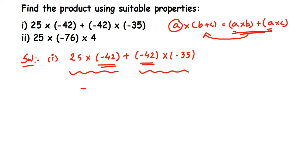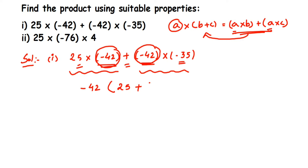Likewise here, minus 42 is common, so I'm going to pull it outside. With minus 42 taken out, what is left inside the bracket: 25, then plus, and after taking out 42, what remains is minus 35. So we write: minus 42 multiplied by open bracket 25 plus minus 35.